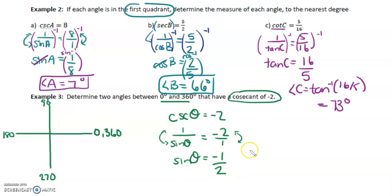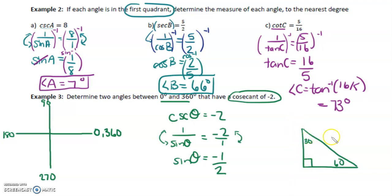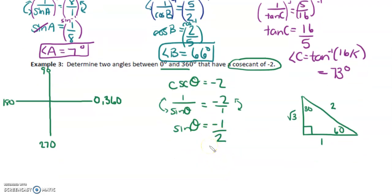Thinking about negative one over two, we consider the 30-60-90 special triangle — the hypotenuse is two, opposite 30 is one, opposite 60 is root three. So which angle has the ratio one over two for sine? The theta is 30 degrees if we have a positive value. You can confirm with a calculator: sine inverse of 0.5 gives 30 degrees.